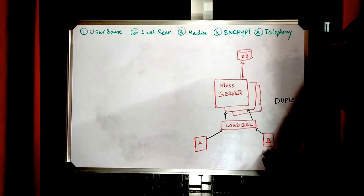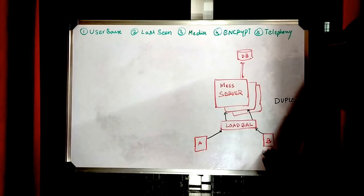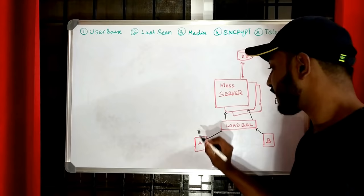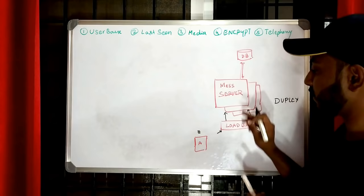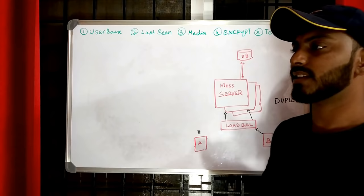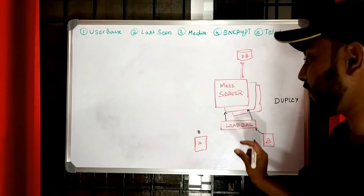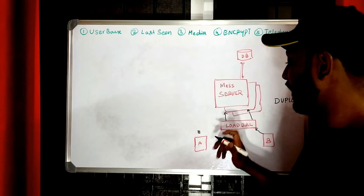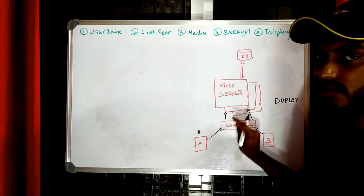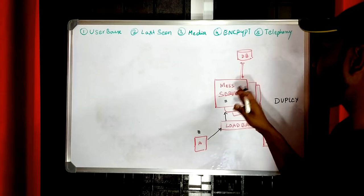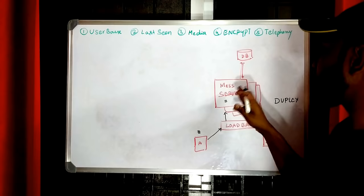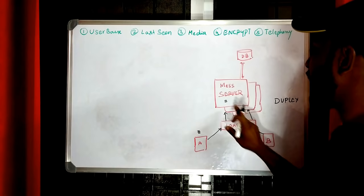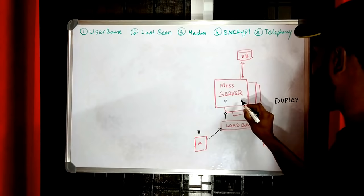Now let's take a scenario and see how messages flow. Client A wants to send a message to client B. Consider client A is not connected to the system right now — the message will be saved in the local database of the application, such as SQLite on Android or iPhone. The message stays on the mobile, and as soon as the client connects to the messaging server, the connection is established and the message is pushed to the server. Once the messaging server receives this message, it looks for the process responsible for sending the message to client B and hands the message over to that process, which then sends it to client B.